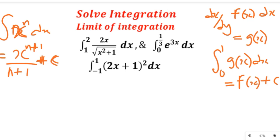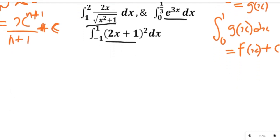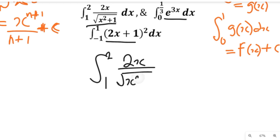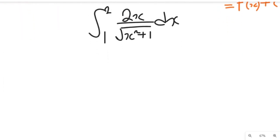Now let's get started. I'm going to use the substitution method to solve the first problem, and then we'll use the back substitution method to solve it as well, so that you can see how both approaches work. Now let's look at the first problem: we have the integral of 2x divided by the square root of x squared plus 1, with respect to x, with limits 1 to 2.